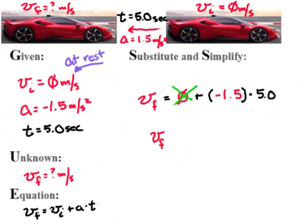And if I put negative 1.5 times 5.0 in my handy dandy calculator, I get negative 7.5 meters per second.